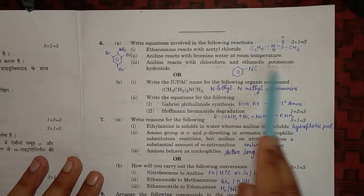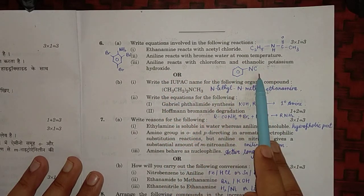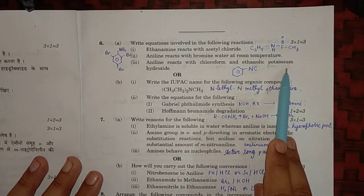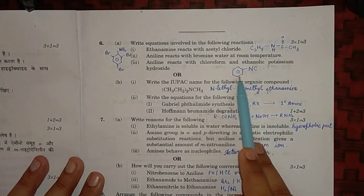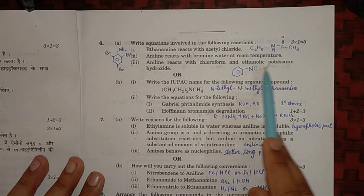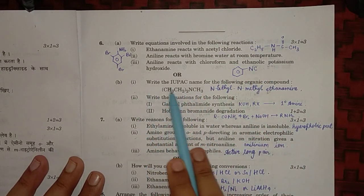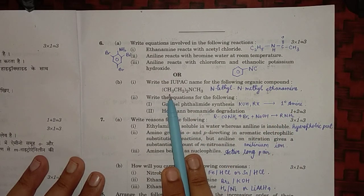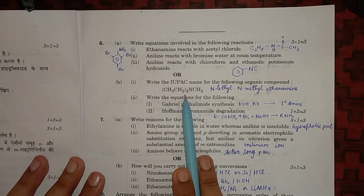Aniline reacts with chloroform and ethanolic potassium hydroxide, so it is a carbylamine reaction with CHCl3 and KOH, and then it forms benzene NC. Part: write the IUPAC name for the following organic compound.